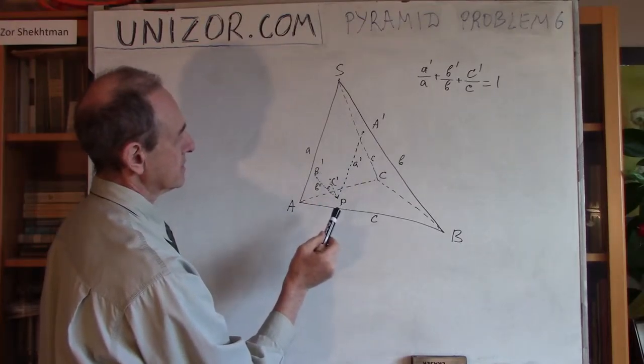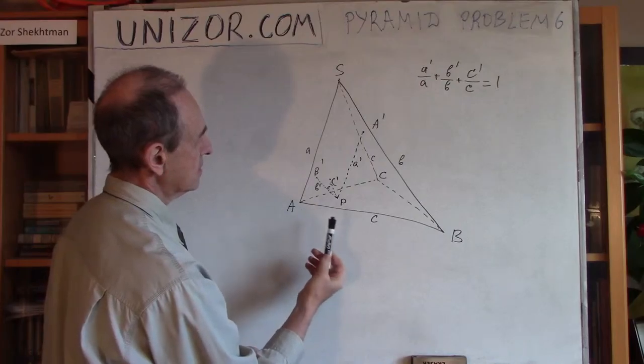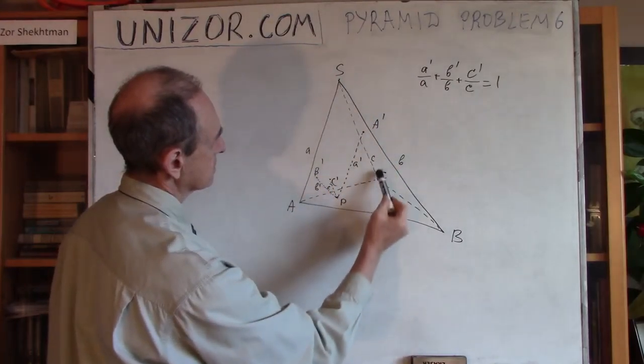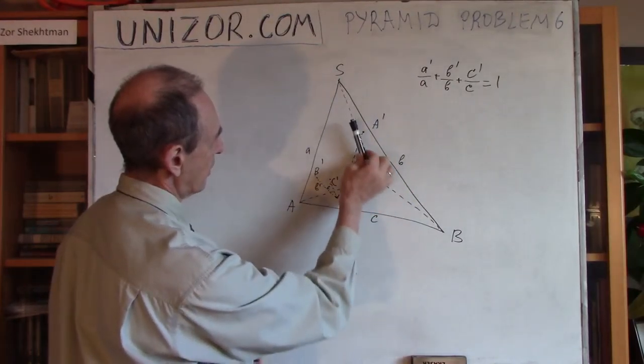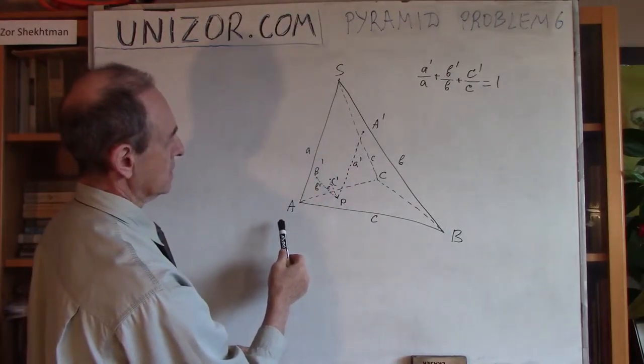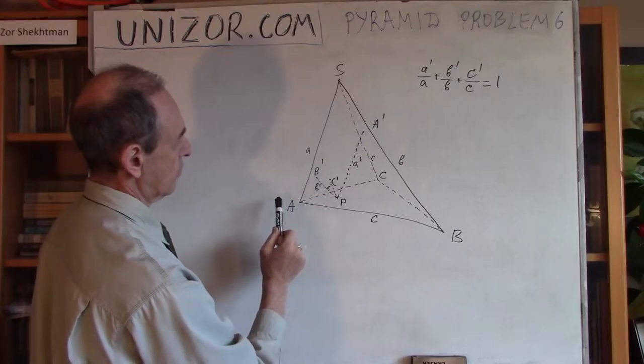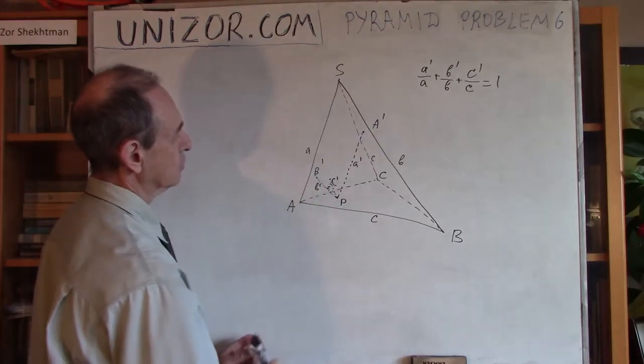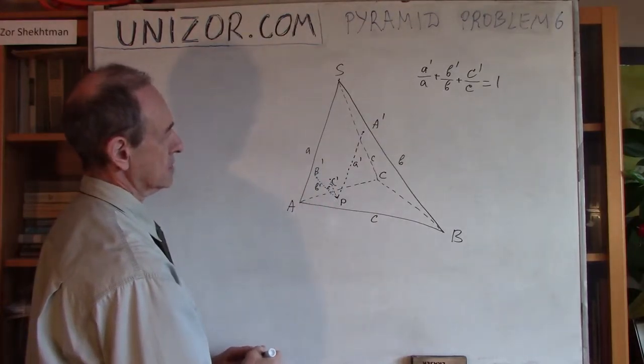And finally, the same thing with C. SC is here, so parallel would be here, and it will hit my front face at point C prime, with the length from P to C prime being c, lowercase c prime.